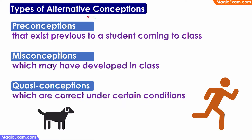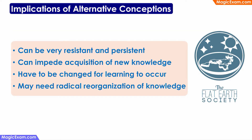In simple words, alternative conceptions, preconceptions, misconceptions and quasi-conceptions are nothing but mis-explanations or misunderstandings. As for their implications: if you search for 'flat earth society,' you will find thousands of people across the world who believe the earth is flat. This is an alternative conception because scientifically we know the earth is a globe. People who believe in the flat earth theory resist any information proving the earth is round — making it a very resistant and persistent alternative conception. When an alternative conception is deeply entrenched in a person's mind, the acquisition of new knowledge is blocked.